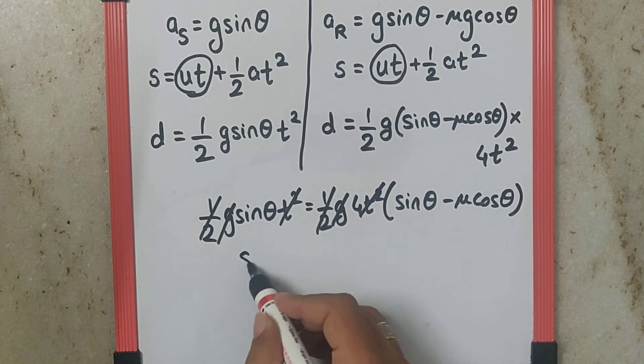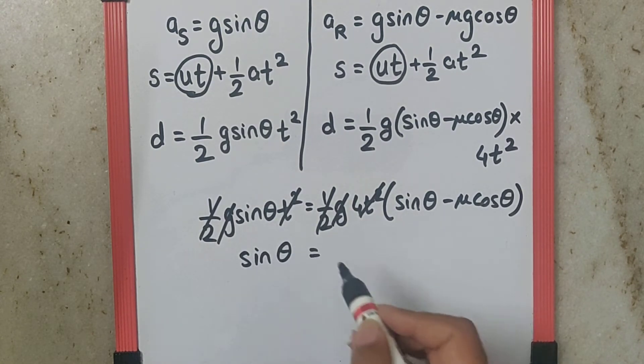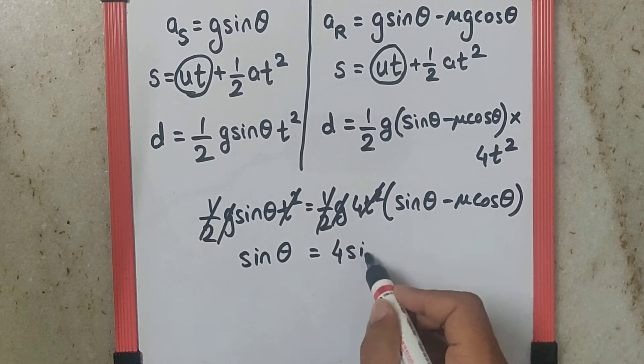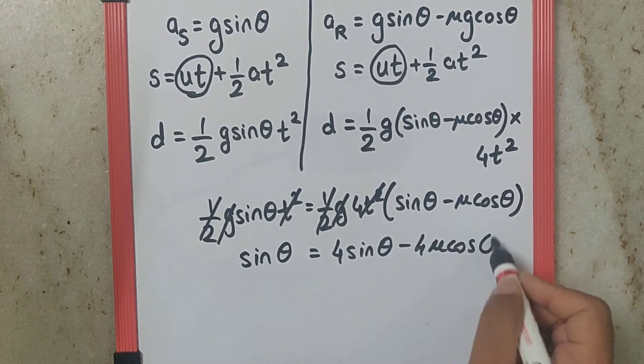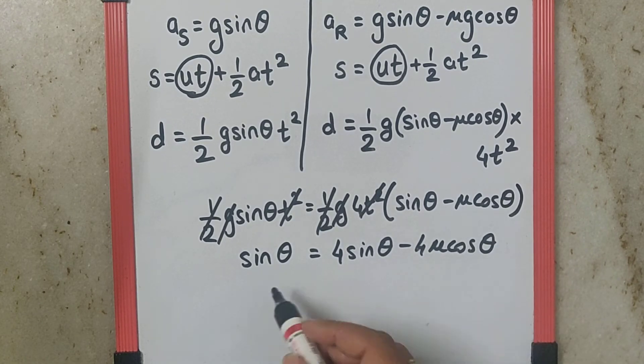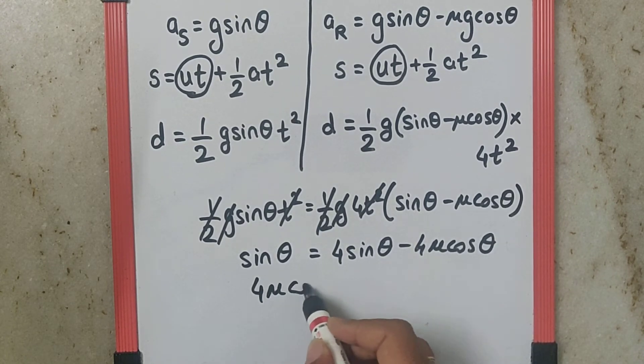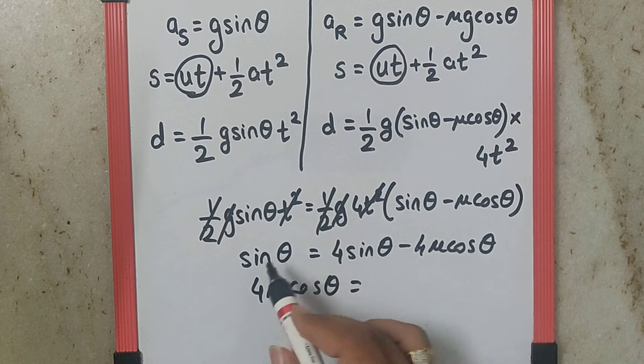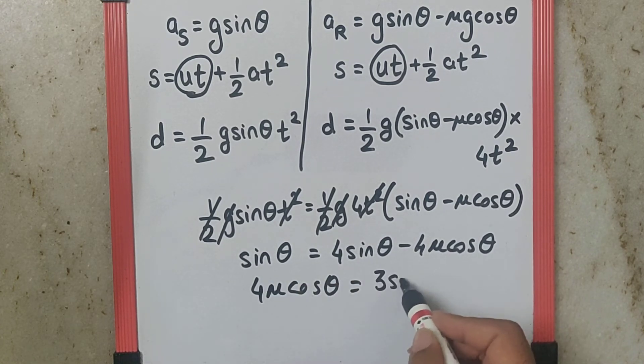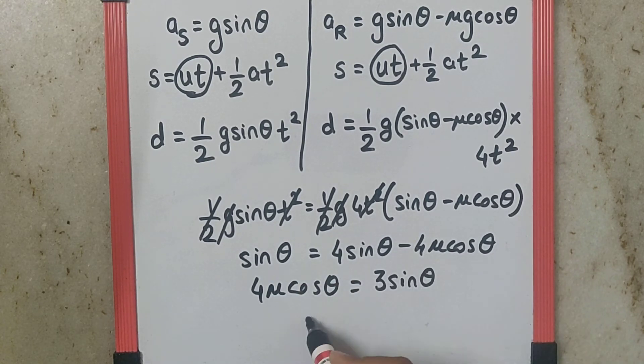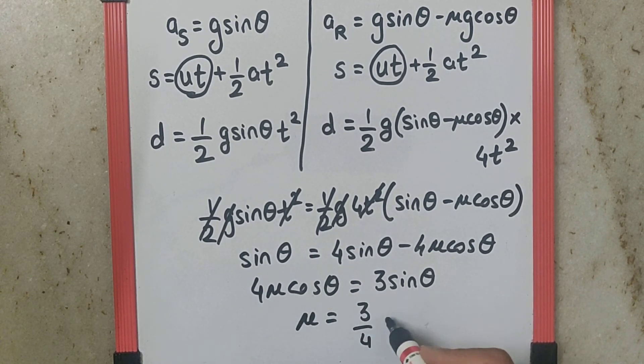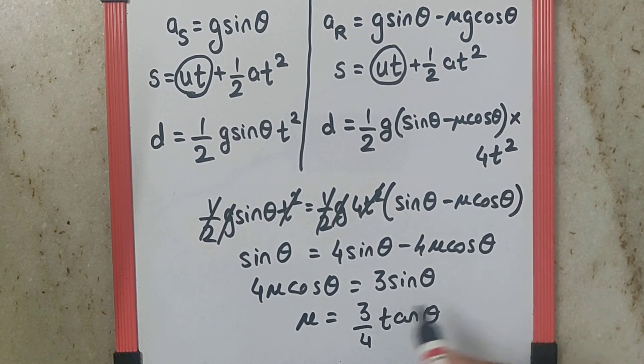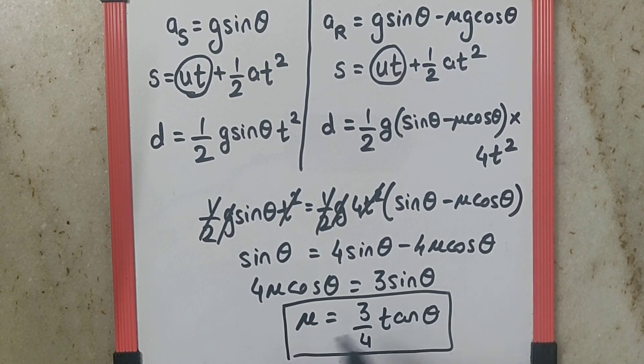So here we can write sin theta is equal to 4 sin theta minus 4 mu cos theta. So if I take 4 mu cos theta over there, we get 4 sin theta minus sin theta as 3 sin theta. So mu will be 3 by 4 sin by cos, tan theta, and that is your final answer.